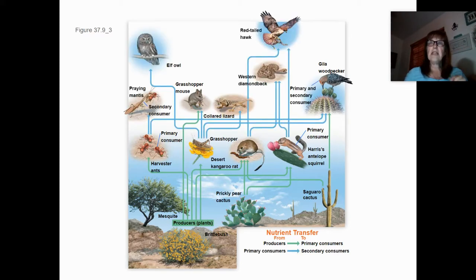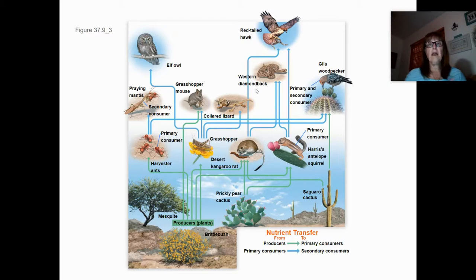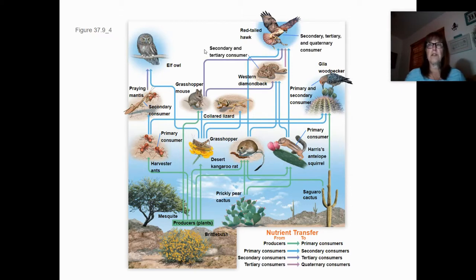Secondary consumers include the elf owl — a secondary consumer eating grasshoppers that eat plants — and the red-tailed hawk eating mice eating plants, also a secondary consumer. However, if the hawk eats a snake that ate a squirrel that ate a plant, then the red-tailed hawk is at the tertiary level. In this diagram, the hawk is shown at the secondary level via arrows, but can appear at the tertiary level depending on what it eats.